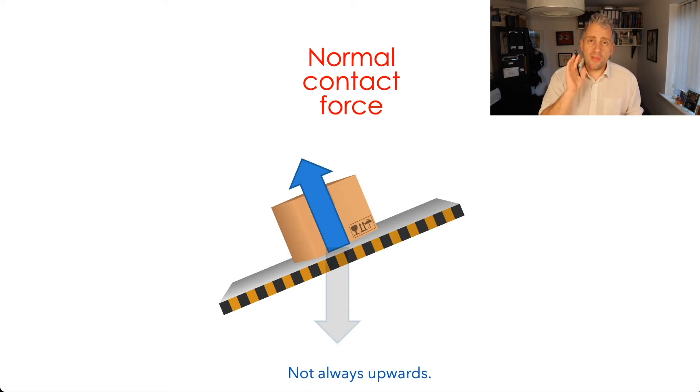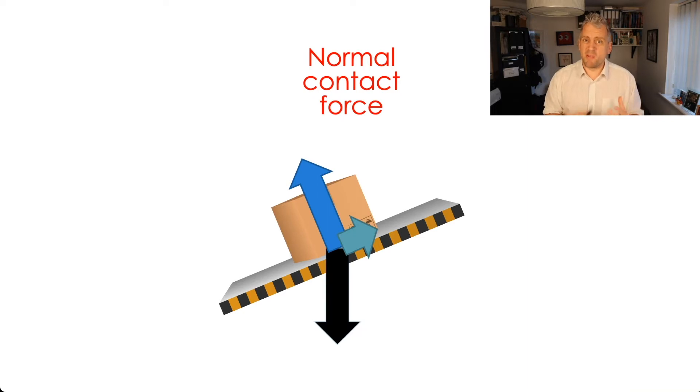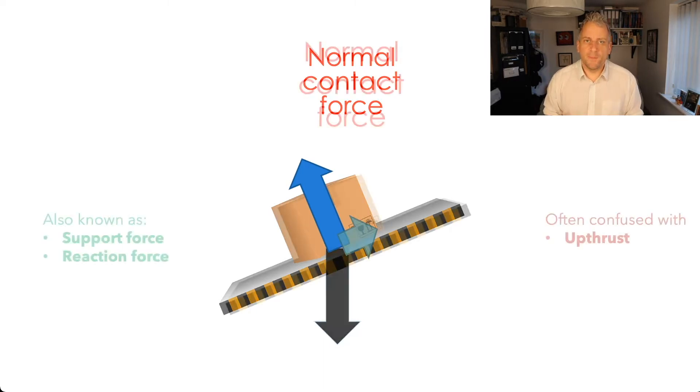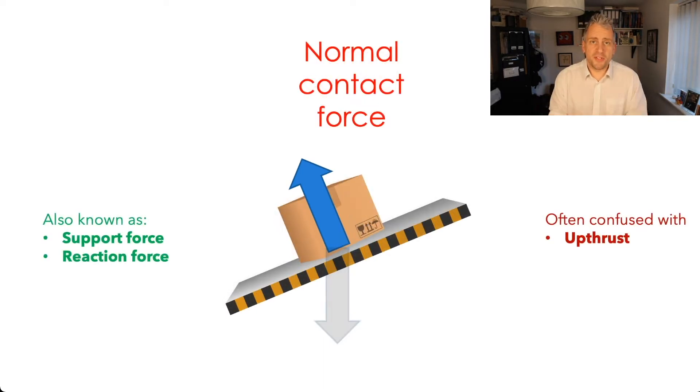So normal contact force doesn't have to act upwards. At the moment that box is about to slide down the slope. So in the real world there's probably going to be some friction acting as well and if we want to consider all of the forces acting then we can draw those on as well. What we mustn't do is we mustn't get it confused with up thrust and I've lost count of the number of times when I've seen people that have described that force acting upwards as an up thrust. It's not. Up thrust is a different thing. So let's have a look at that now.